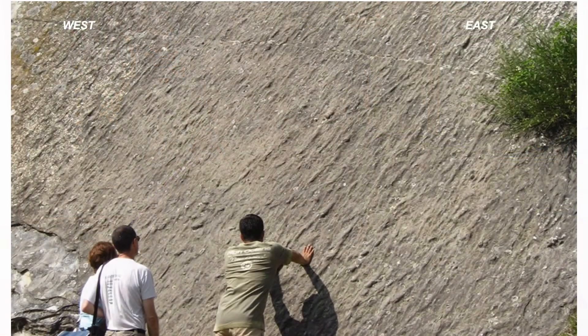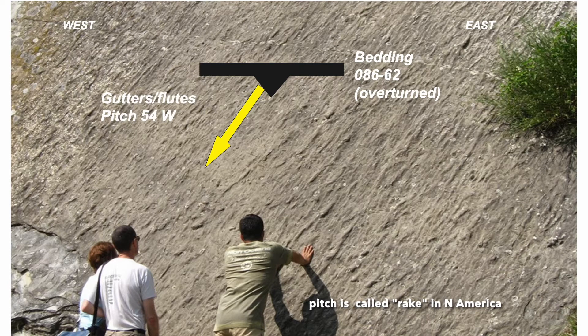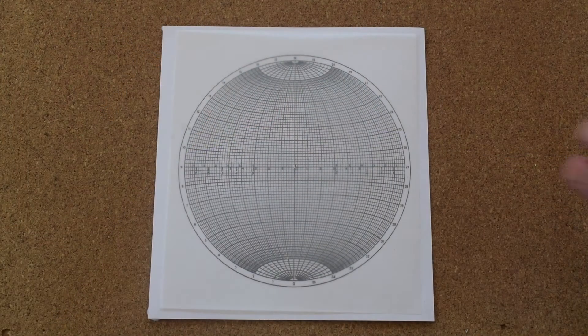Here's our first example. In the field we can measure the bedding: it's 086/62 and it's overturned. On that bedding plane we can see flute casts, and we can measure their orientation as a pitch of 54 degrees towards the western end of our strike symbol. That's the orientation of the features we want to reorient so that the bedding becomes horizontal and the right way up.